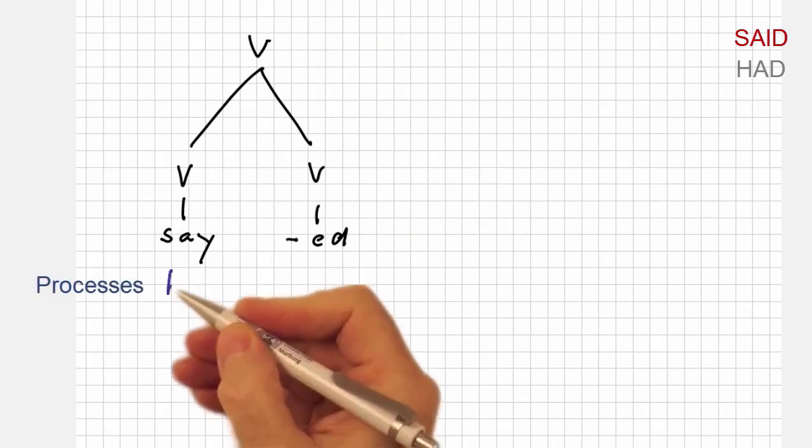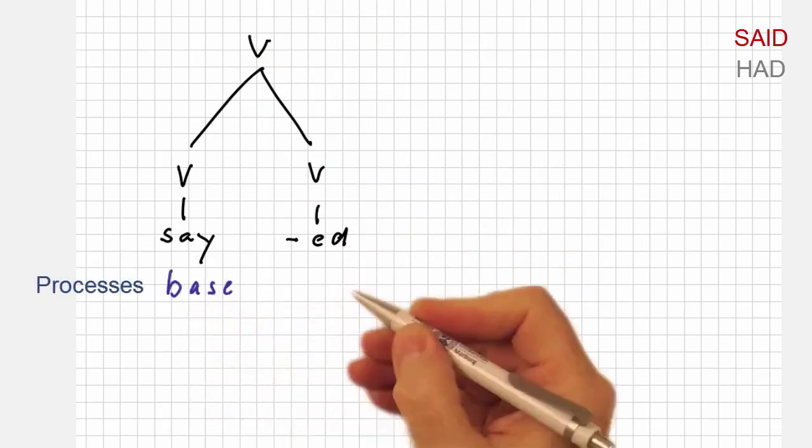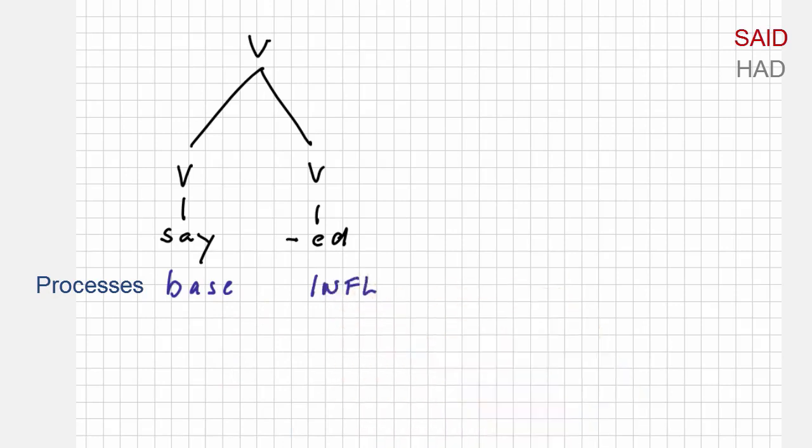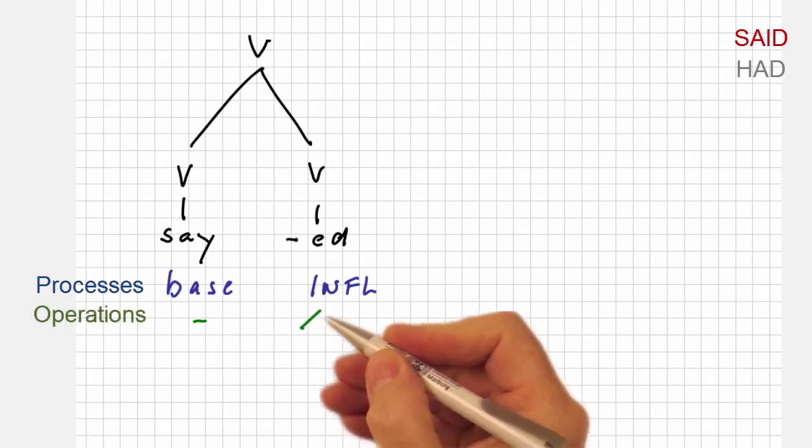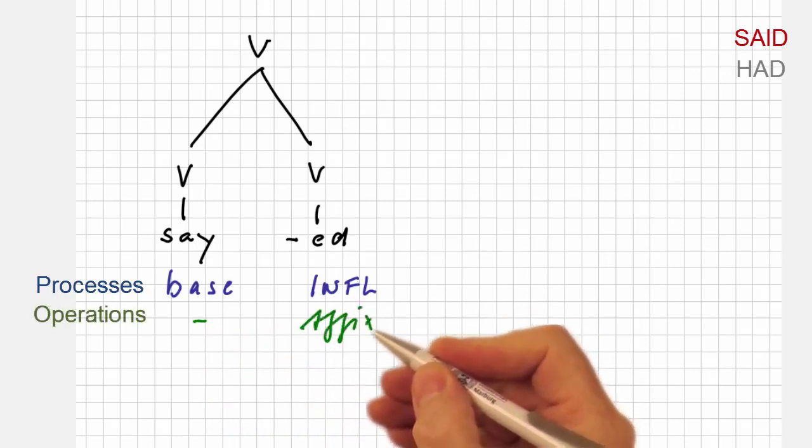And the morphological process involved? Say is the base form and the attachment of -ed is a case of inflection. And as far as the morphological operations are concerned, we have a case of affixation.